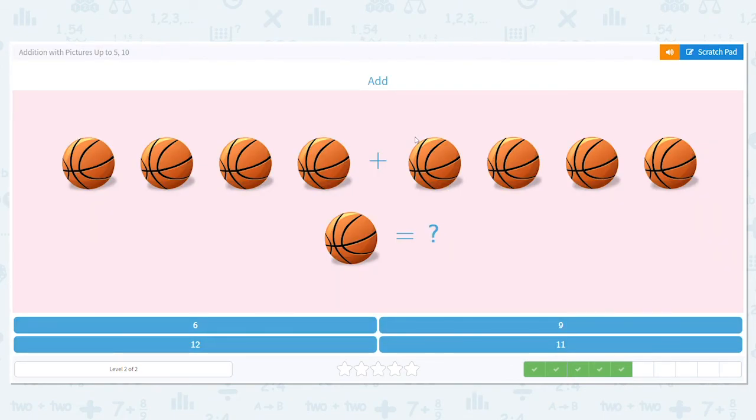Let's try our basketballs. We have 4 basketballs here. And we have 5 basketballs here. So we're doing 4 plus 5. It will either be 6, 9, 11, or 12. So let's count.